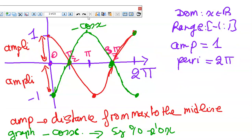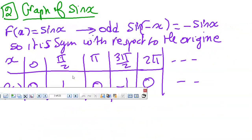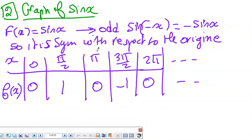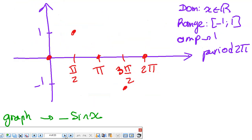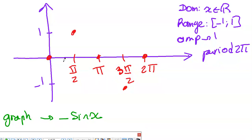Now let's move to the sine function. Sine is an odd function. Why? Because sine(-x) equals minus sine(x), so it's symmetric with respect to the origin. We take the same particular points: 0, π/2, π, 3π/2, and 2π — this is a full period. Now I will plot the points on the graph.